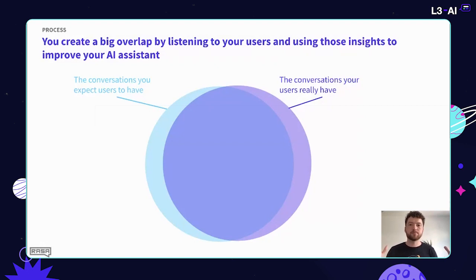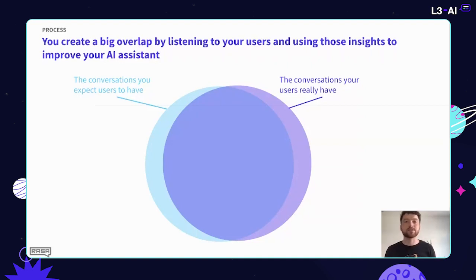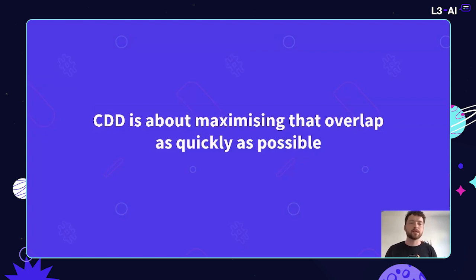CDD is about using insights to improve our AI system. Ultimately, what we're trying to do is create a lot of overlap — so that the things we've implemented are in fact the things users are trying to say and do. CDD is just about maximizing the overlap between those two circles: what your assistant does, and what users want it to do.